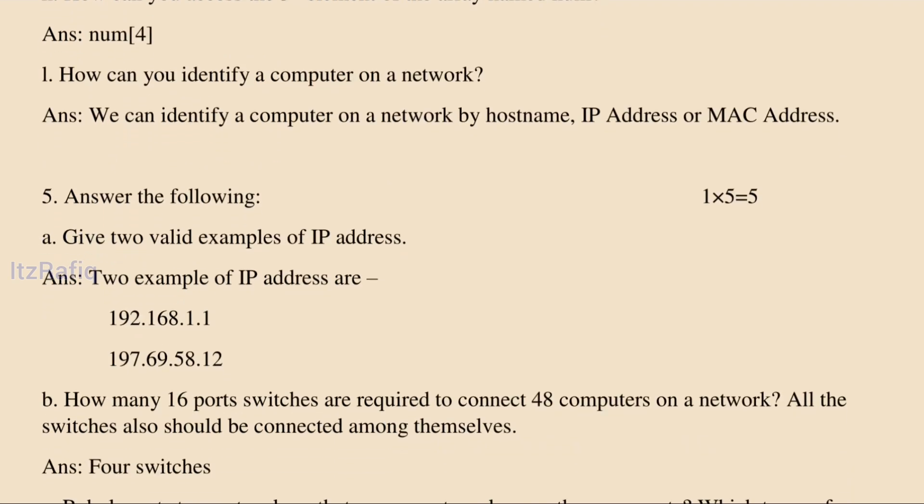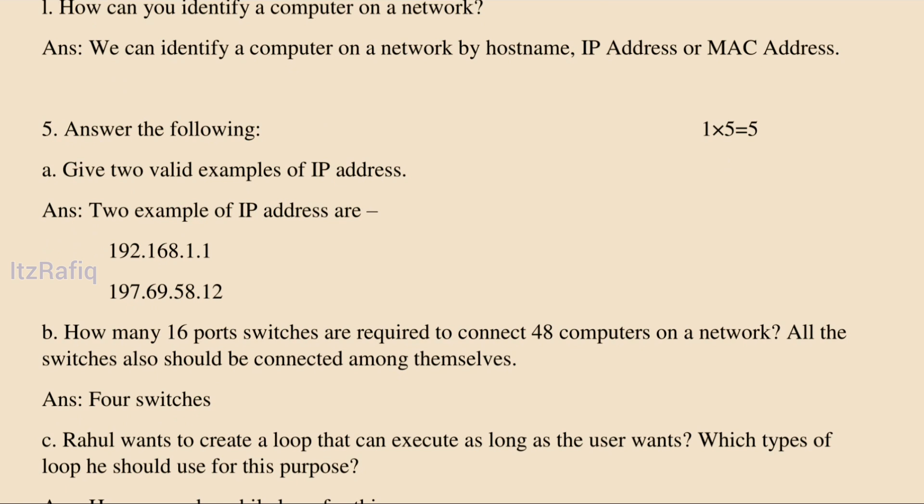The most unique way to find a computer is by MAC address, because sometimes two computers can have the same name and even IP addresses can sometimes be the same. When giving examples of IP addresses, remember the range should be from 0 to 255 and grouped in four numbers separated by dots, like 192.168.1.1. A number greater than 255 makes it an invalid IP address, and using three or five periods also makes it invalid.